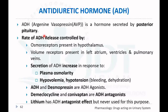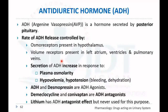The first factor is osmoreceptors present in the hypothalamus. There are also hormone receptors present in the left atrium, ventricle, and pulmonary veins of the heart. The secretion of ADH is increased in response to increased plasma osmolarity.